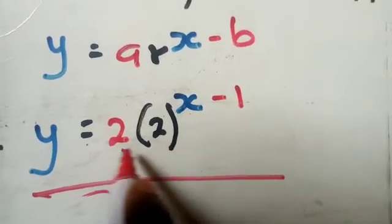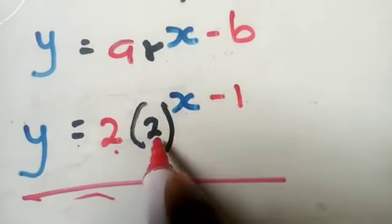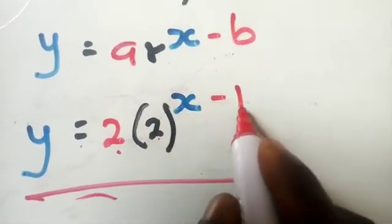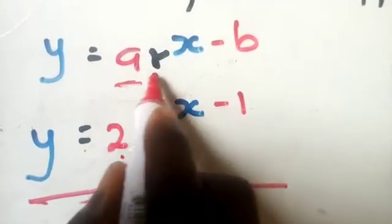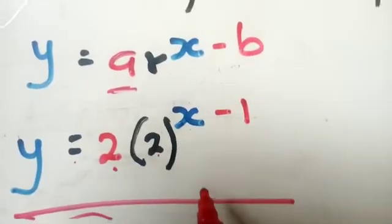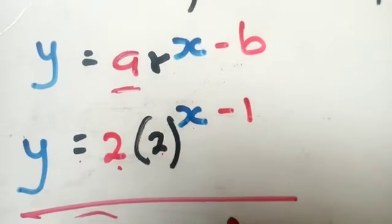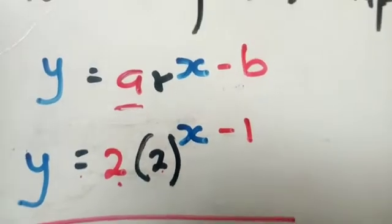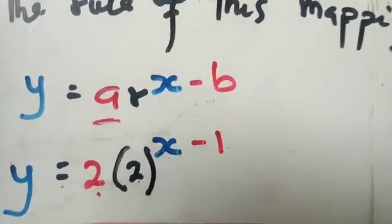Do not multiply the constant a by the R term — R is being raised to the power of X minus B, and the 2 (which is a) is a separate constant multiplied by that. It is advisable to leave everything in that form if you are not sure how to simplify. Don't forget to subscribe to the YouTube channel for more content like this.